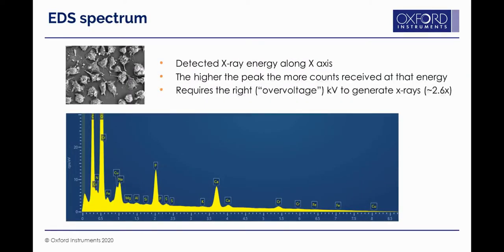Here is a closer look at a spectrum generated from the sample shown in the electron image — macrophages grown on a plastic coverslip. Along the bottom we have our X-ray energy, and where we have peaks, that's where we've accumulated many X-ray counts at that energy. The peaks indicate X-ray intensity, and this allows us to generate quantitative data about how much of each element is within our sample.